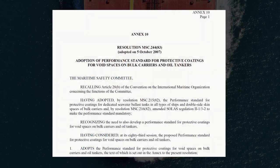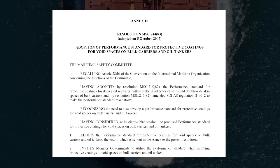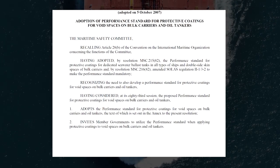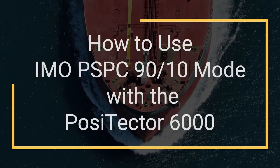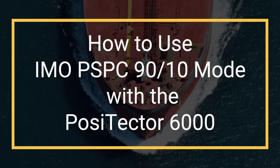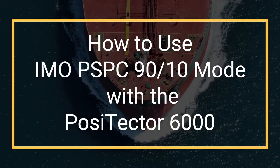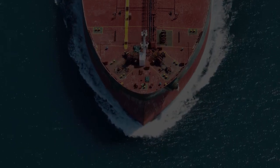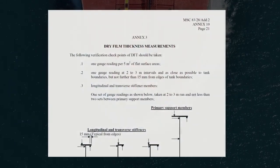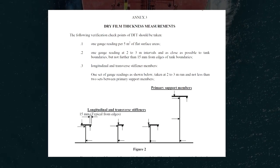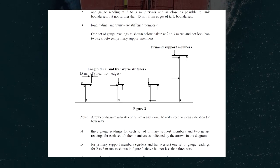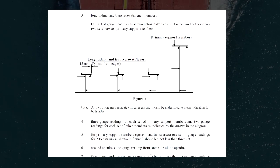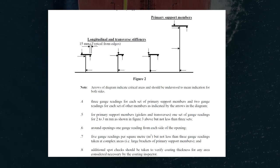Be sure to fully read and understand the IMO-PSPC-9010 document prior to inspection. The Performance Standard for Protective Coatings 9010 specifies several important locations to be measured and the number of measurements required, including details on flat surface areas, tank boundaries, stiffener members, complex areas such as large brackets, and more. A link to the PDF is available in the description.